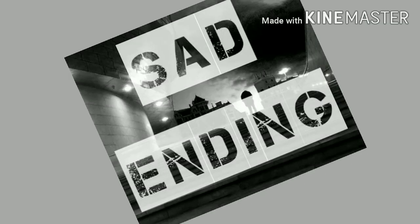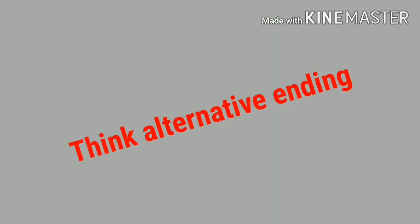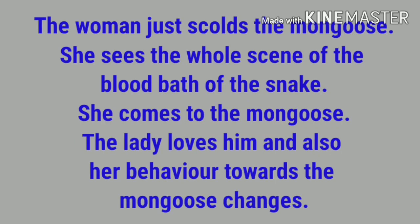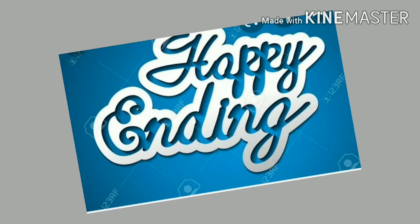Children, do you like this ending? No. Let's think of an alternative ending for the story. In this scenario, the woman just scolds the mongoose and goes to the child. There, she sees the whole scene of the bloodbath of the snake and understands what could have happened. She takes her child in her hands and comes to the mongoose. The mongoose was sitting with an innocent and sad face. The lady forgives the mongoose and loves him. Since then, her behavior towards the mongoose changes and all four live happily together. The story is now happily over. Children, do you like this alternate ending?